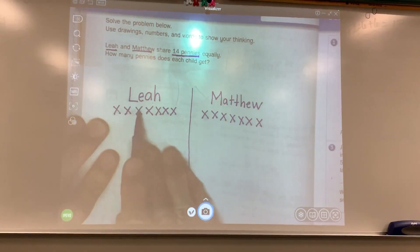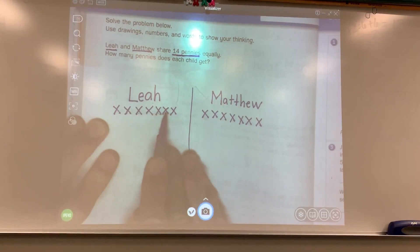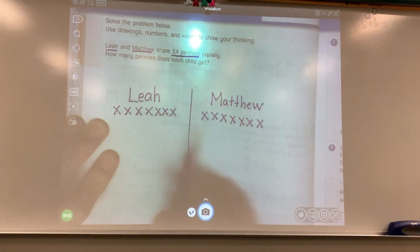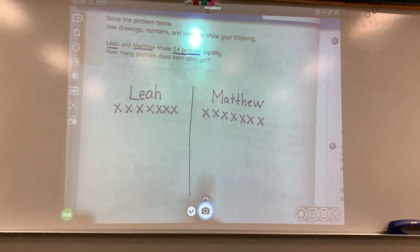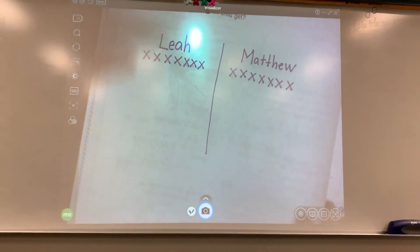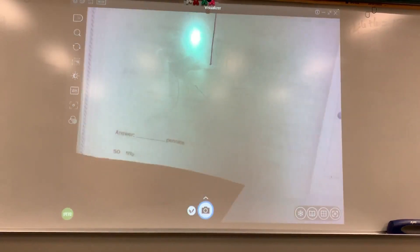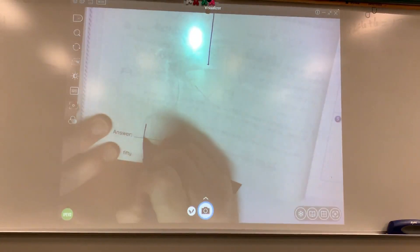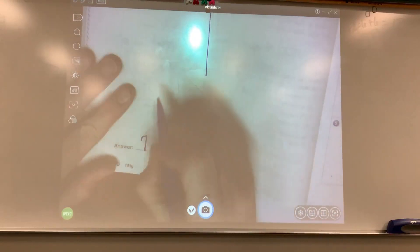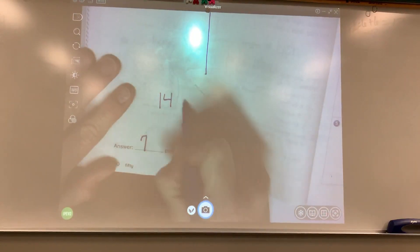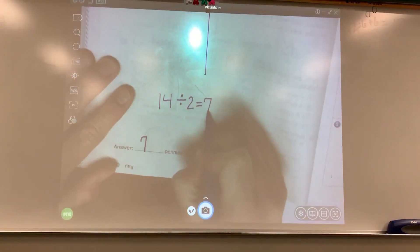So how many does each child get? One, two, three, four, five, six, seven. One, two, three, four, five, six, seven. They both get our answer down here at the bottom. They both get, I'm sorry, seven pennies. Each child gets seven pennies. So 14 divided by two equals seven.